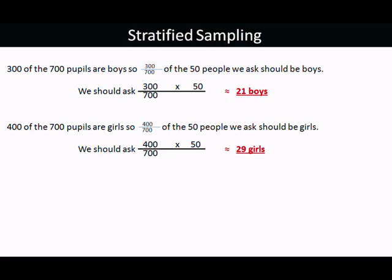And of course it makes sense to round that to 21 and 29, because you can't ask 0.57 of a person.